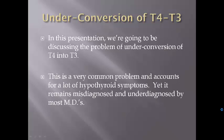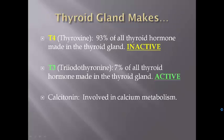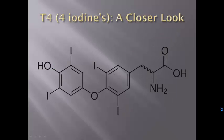Under-conversion of T4 into T3 is a very common problem that accounts for a lot of hypothyroid symptoms, yet it remains misdiagnosed and underdiagnosed by most medical doctors, including endocrinologists. Your thyroid gland makes three basic hormones: T4, or thyroxin, which represents 93% of all thyroid hormone produced and is biologically inactive; T3, or triiodothyronine, which represents 7% and is the active form; and calcitonin, which is involved with calcium metabolism.